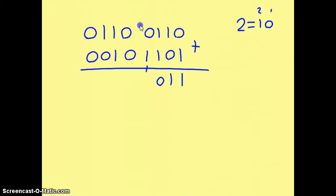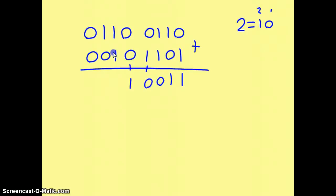Looking at the next column, 0 plus 1 plus 1 gives us 0, carry the 1. 0 plus 0 plus 1 gives us 1. 1 plus 1, as we've seen previously, gives us 0, carry the 1. 1 plus 0 plus 1 gives us 0, carry the 1. 0 plus 0 plus 1 gives us 1.